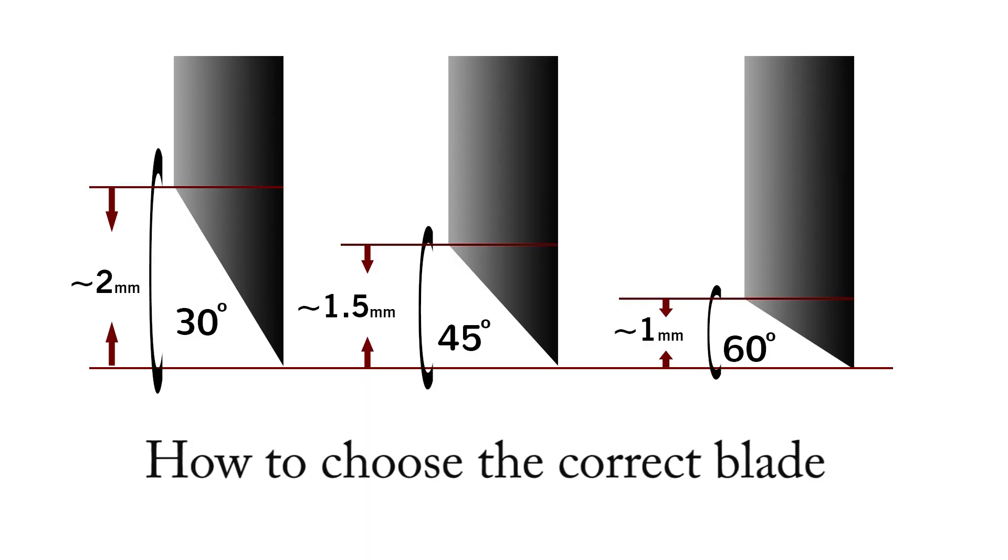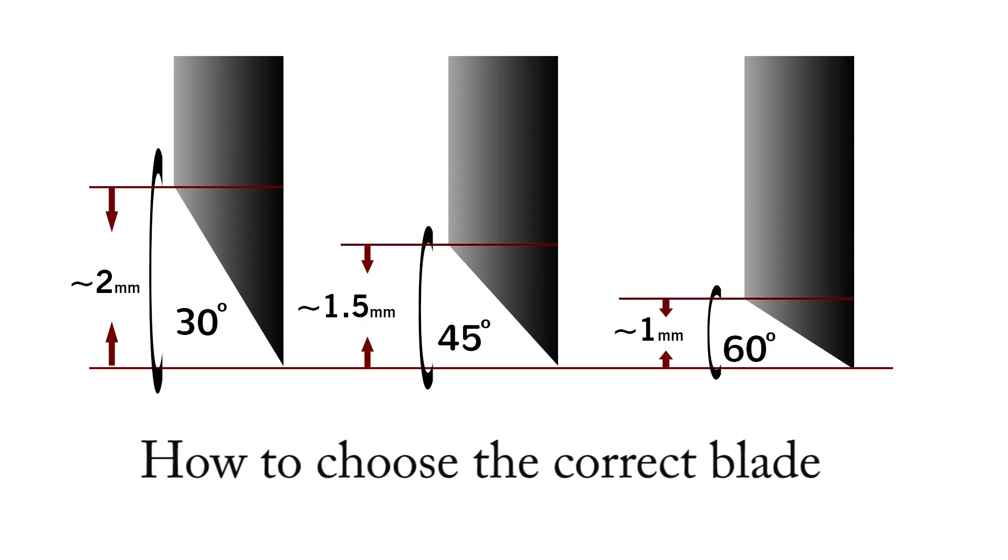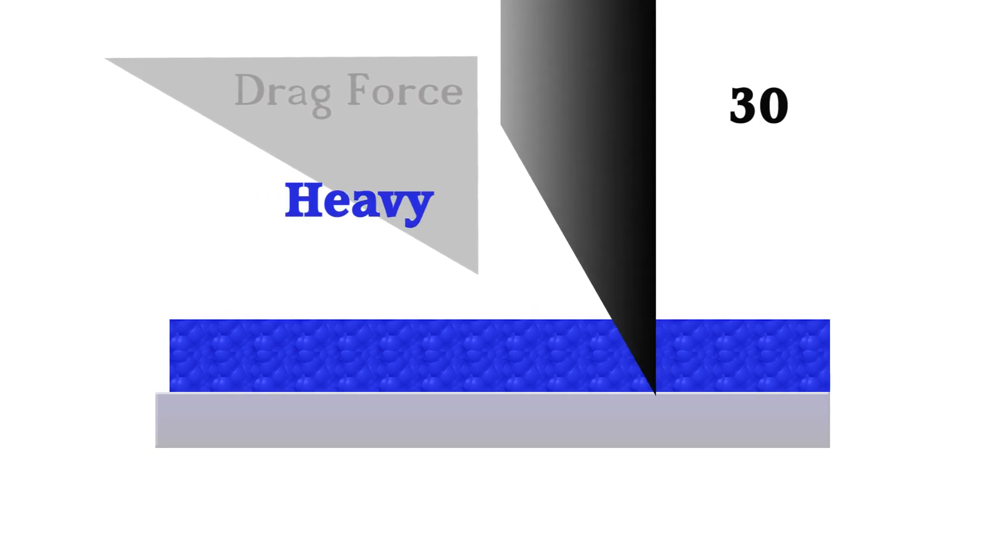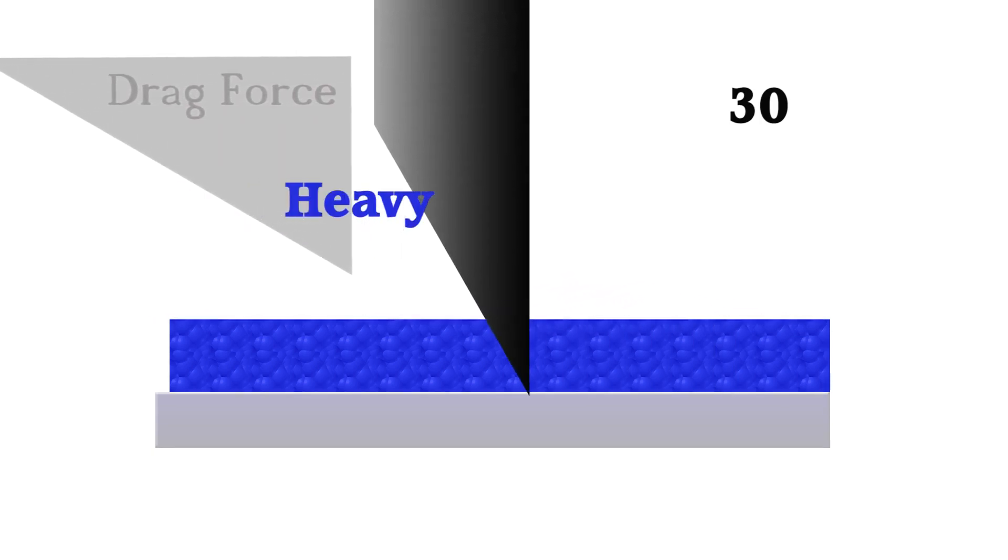Here is a guide. 30-degree angle blades have the sharpest tip and most effective cutting edge for about 2 millimeters thick material. It easily penetrates the material but requires more force to drag through it.